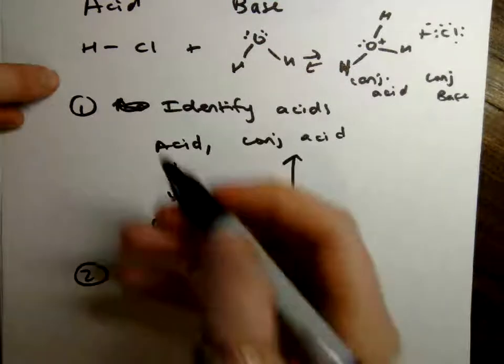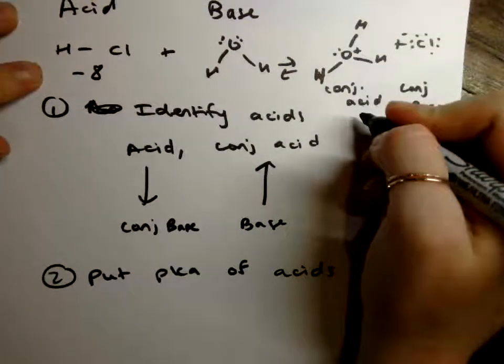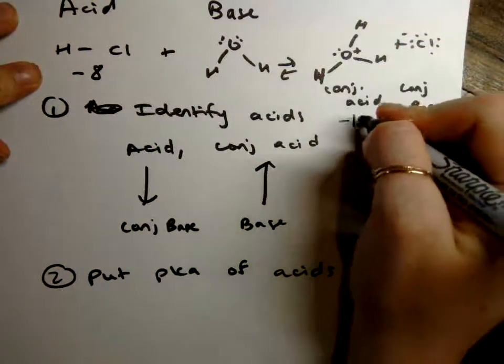So hopefully you have those in your mind. But HCl, that acid is negative 8. And the conjugate acid, H3O plus, is negative 1.7.